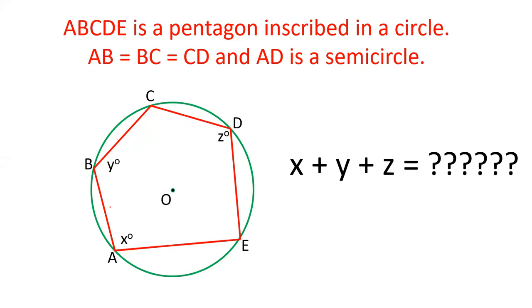It is given that AB equals BC equals CD, and if we join AD it will be a semicircle.